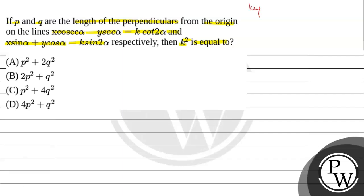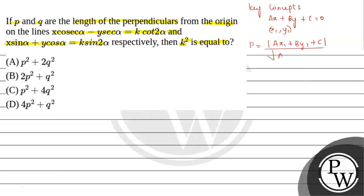The key concept for this question is: if we have a line AX plus BY plus C equals 0 and a point (X1, Y1), then the perpendicular distance P is calculated by the formula: P equals modulus of AX1 plus BY1 plus C, divided by root of A square plus B square.